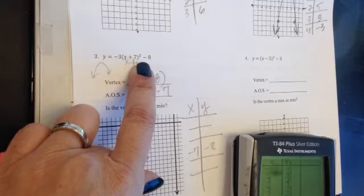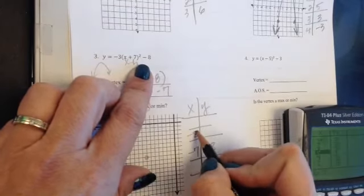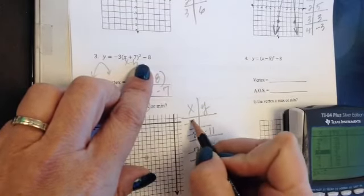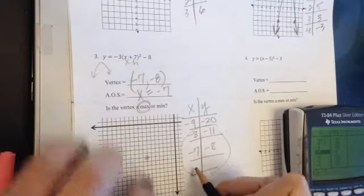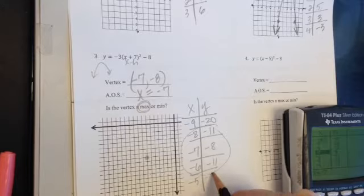I'm going to have to scroll down a little bit in my table because this negative 7, negative 8 sits around. Negative 8 and negative 11, negative 9 and negative 20. I have a feeling I'm only going to be graphing these points. Negative 6, negative 11, negative 5, negative 20.